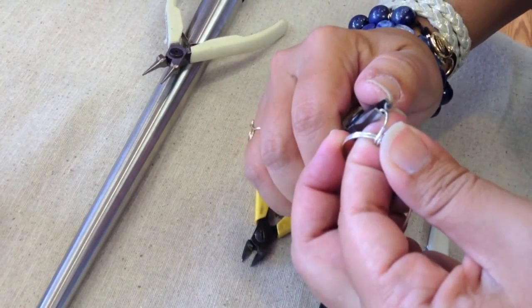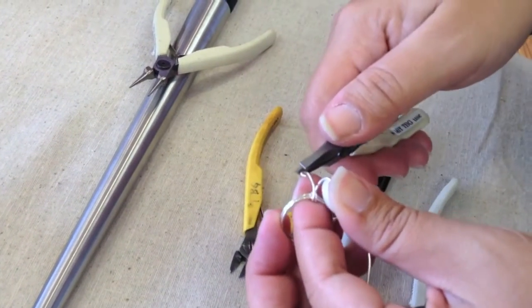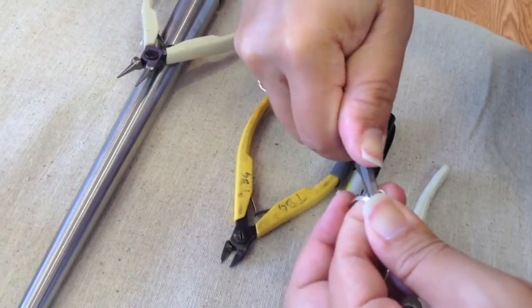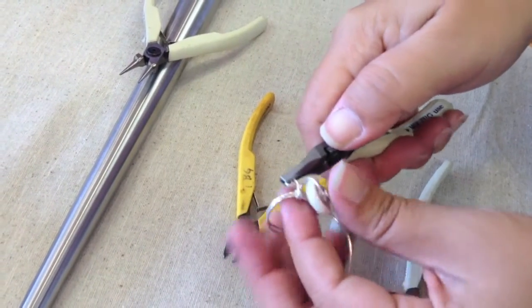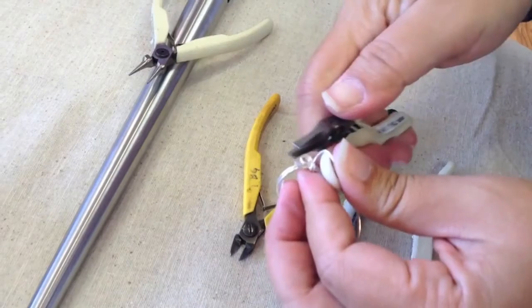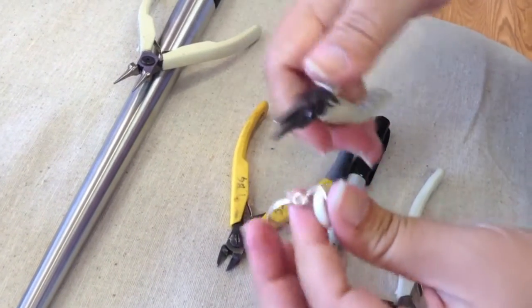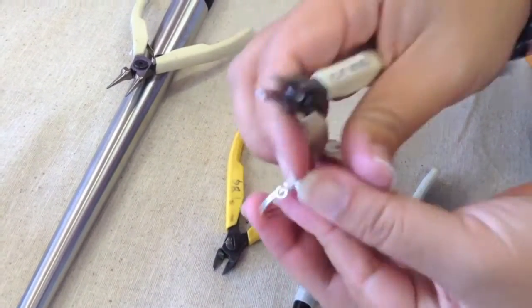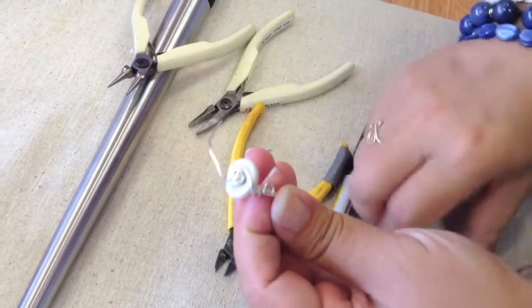Switch to your flat nose and keep rolling that spiral up until it is seated on top of the ring shank. Compress it down on top of the ring shank to secure it and repeat on the other side.